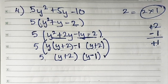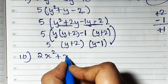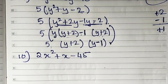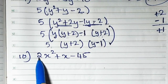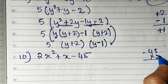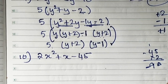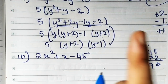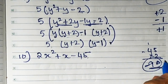I'll do sum number 10 now. It is 2x squared plus x minus 45. Now here I can't take anything common out. So what I have to do is multiply this coefficient with this. So 45 — minus 45 times 2 is 90. So I have minus 90. When I multiply first and last, now we have to break 90.